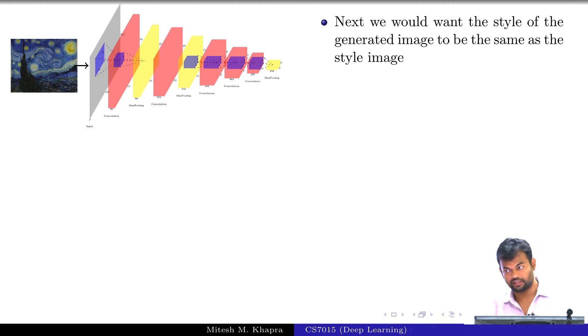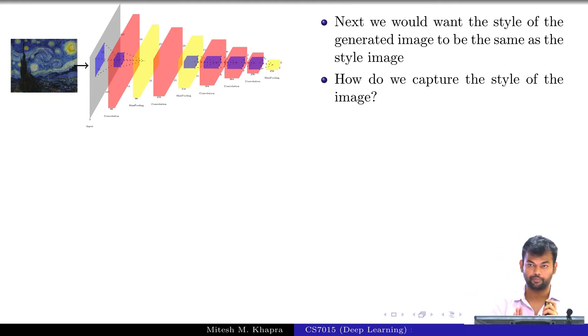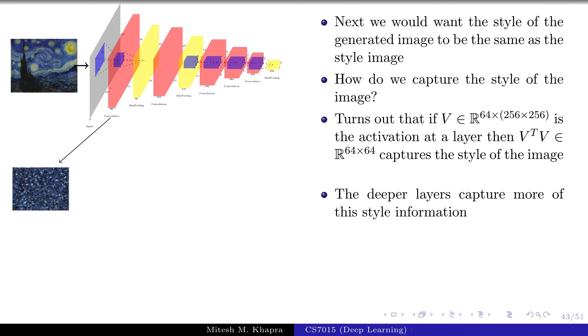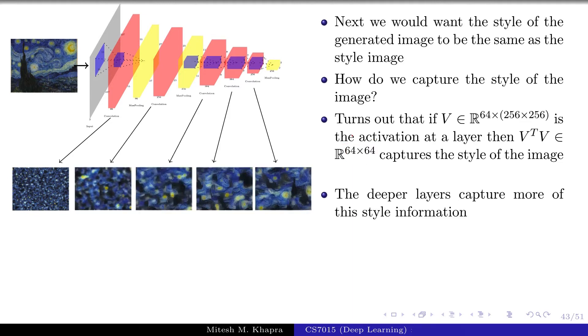Now for style, how do you capture the style of the image? The explanation given here - and I'm not very sure about this, but maybe it comes from traditional computer vision literature - I just take it on faith that if you have this volume here, which is say 64 by 256 by 256 or any other dimension, then V transpose V, which is a 64 by 64 dimensional matrix, captures the style of the image. This is what has been written in the original paper. We'll just take it for granted. Here is the illustration: as you go deeper and deeper, if you plot this 64 by 64 image, you get different styles. As you go deeper, you get a better representation of the style of the original image.